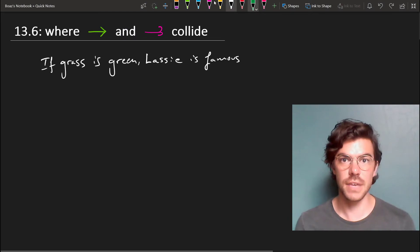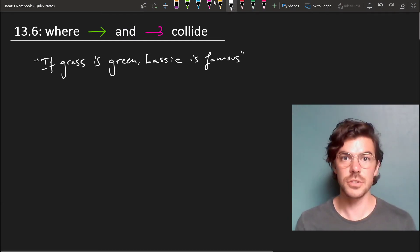Have a look at the following sentence. If grass is green, then Lassie is famous. Grass is green is true, and so is Lassie is famous. And so this all comes out as a true material conditional.